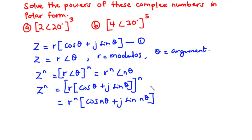However, in this video we are going to focus on finding the powers of complex numbers. We have two examples here: solve the powers of these complex numbers in polar form. For example, we have a: 2 polar 20 all cubed, and b: 4 polar 30 all exponent 5. Let's solve this together.